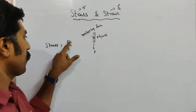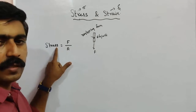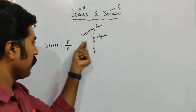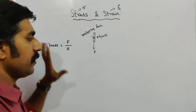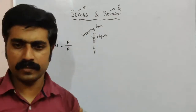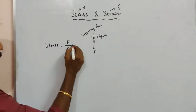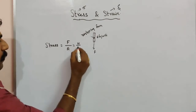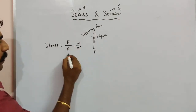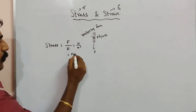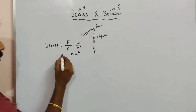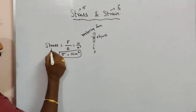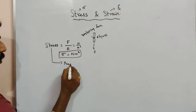Stress is directly proportional to force — if force increases, stress increases. It is inversely proportional to area — if area decreases, stress increases. Force per unit area is equal to Newton per meter squared. Stress is denoted by the term sigma.